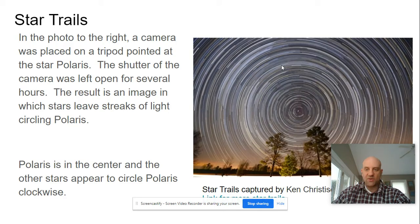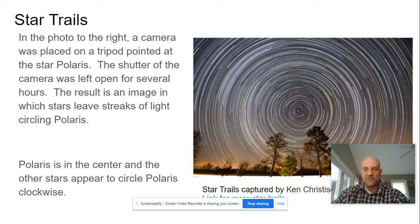From that, we can determine the Earth's rate of rotation. The way that we explain this is that Polaris is located directly above Earth's axis of rotation. Since the other stars appear to go around one time in a 24-hour period, we can divide 360 degrees by 24 hours to determine Earth's rate of rotation: 15 degrees per hour.